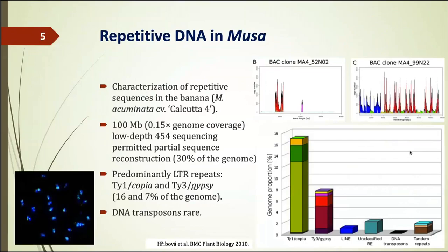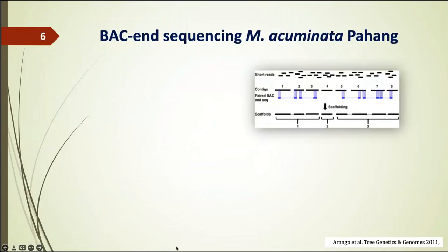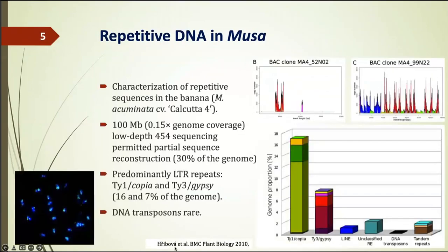That is cytogenetics so far. Gradually, step by step, I go with you more into the genomics. What people did about 12 years ago was a very nice study by Regil Bova from the group of Jaroslav Dolesov in Olomouc. They made an analysis of the repetitive sequences. For that, they fragmented genomic DNA into small pieces grown in bacteria — the so-called bacterial artificial chromosomes, or BACs.